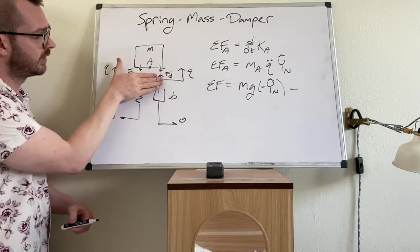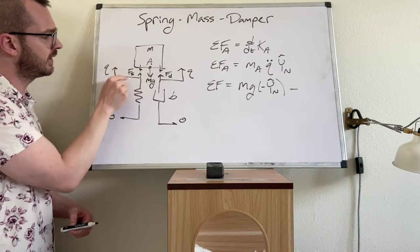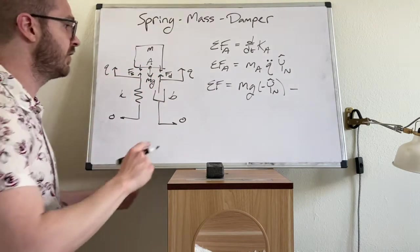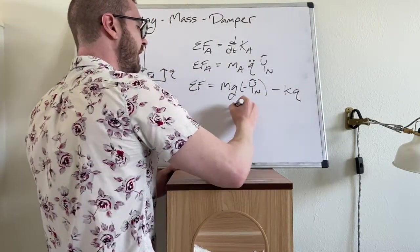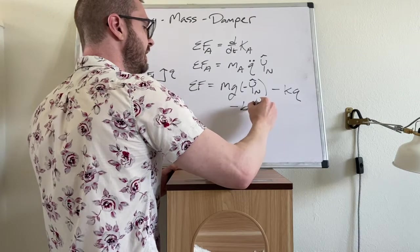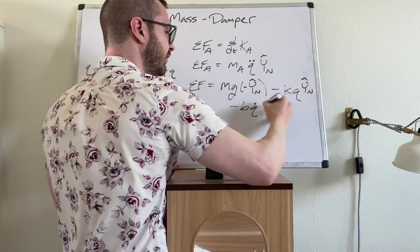Spring force and damper force both point down. So we have minus K times Q and then minus B times Q dot. And these are both in the Y hat N directions as well.